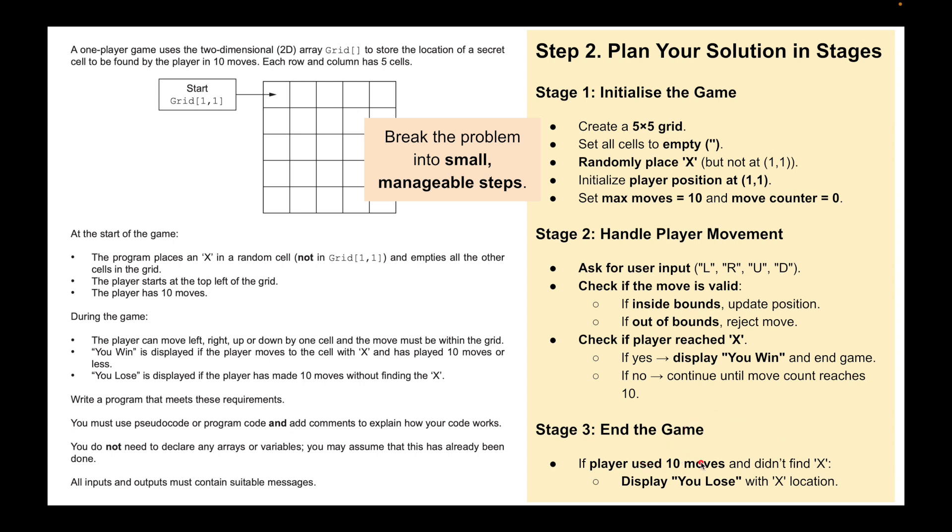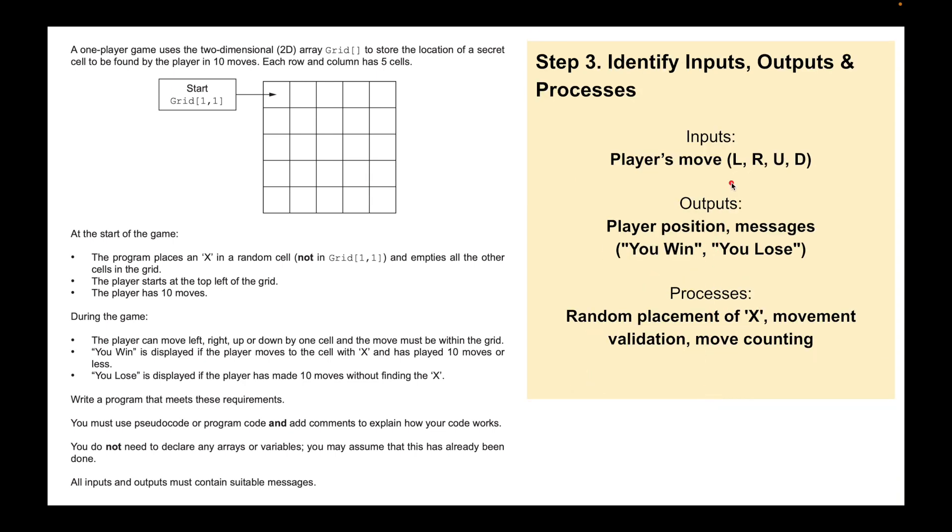It's going to check if the position reaches the X. If yes, it will display a win message. If no, it will continue until move count reaches 10. At the end of the game, if the player uses 10 moves and didn't find the X, it will display a lose message. So there's the three steps. We've identified the inputs: left, right, up, down. We've identified the outputs: you win or you lose. And the process is the random placement of the X, movement validation, and move counting.